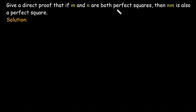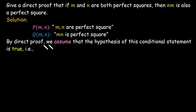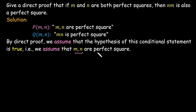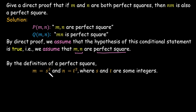Let's take one more example: give a direct proof that if m and n are both perfect squares, then their product is also a perfect square. The hypothesis is that m and n are perfect squares, and the conclusion is that their product is also a perfect square. By direct proof, we assume the hypothesis is true — m and n are perfect square numbers.